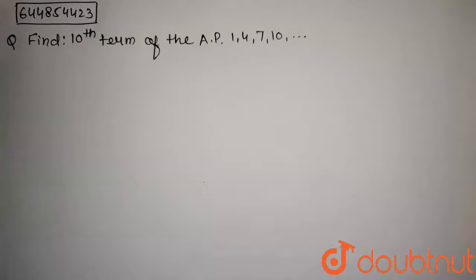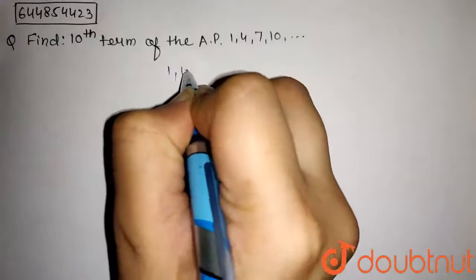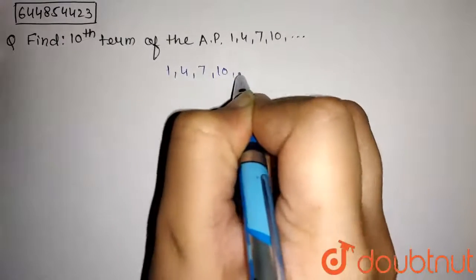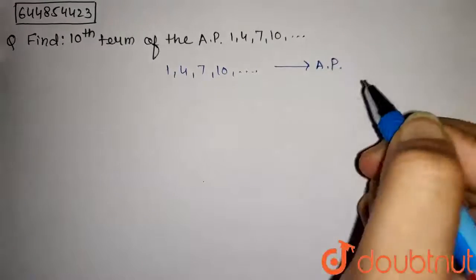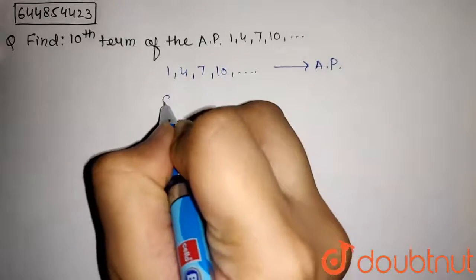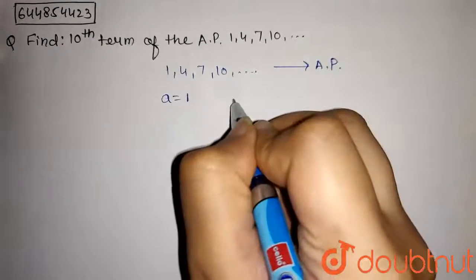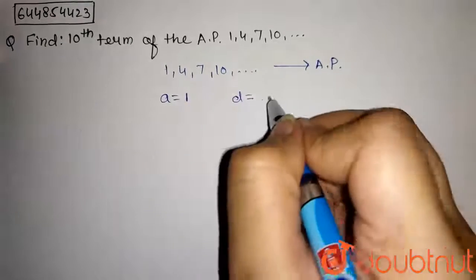We have given that the series 1, 4, 7, 10, and so on belongs to an AP. If this belongs to an AP, the first term is 1. The common difference will be the difference between the second term and the first term, so it will be 4 - 1 = 3.